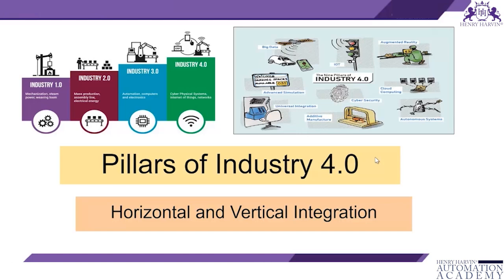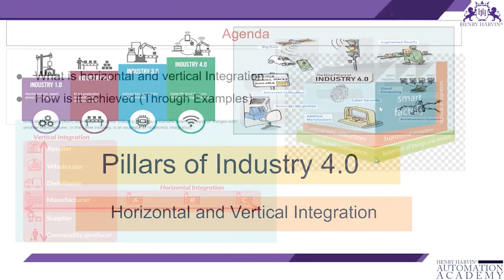Integration means integrating processes between organizations. When it comes to production, horizontal integration refers to well-integrated processes at the production flow level, while vertical integration means the production flow is tightly coordinated with high-level business processes such as procurement and quality.